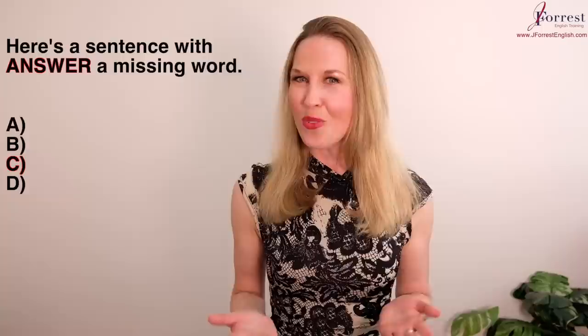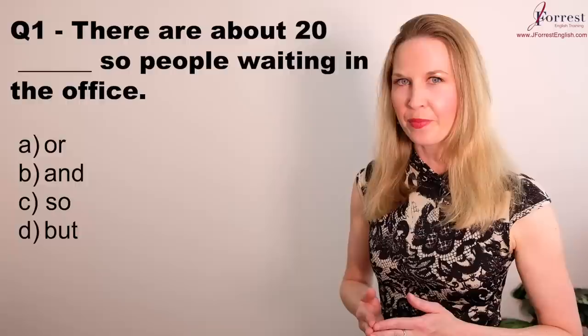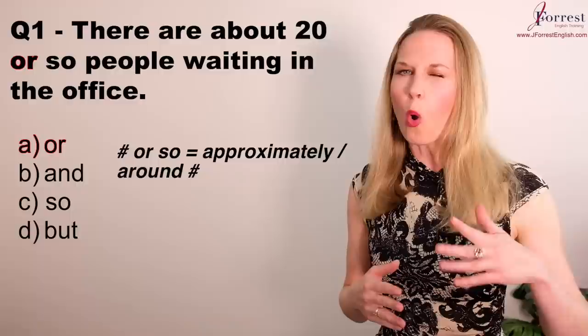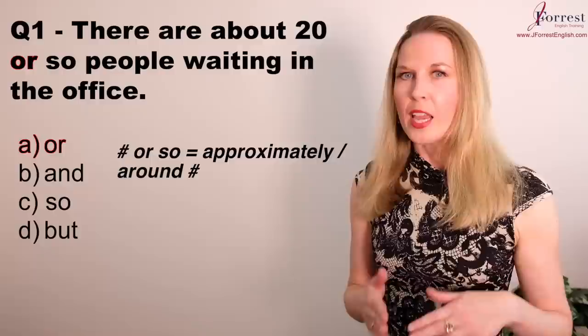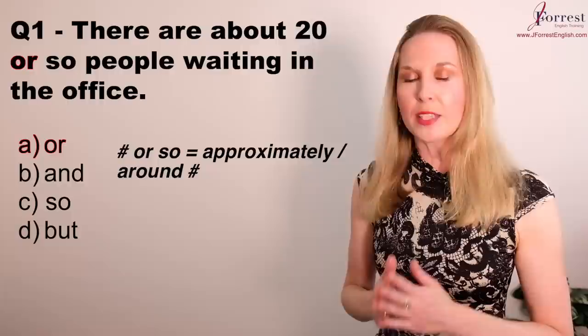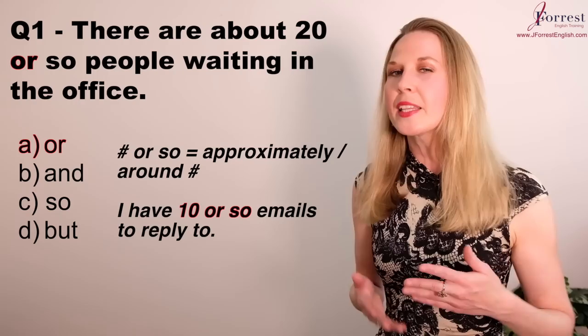Let's get started with question number one: There are about 20 or so people waiting in the office. We use 'or so' to mean approximately — around 20 people. But notice the word order: there are 20 or so people, compared to there are approximately 20 people. This is a great casual expression: I have 10 or so emails to reply to.